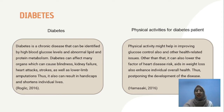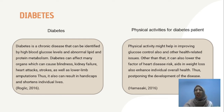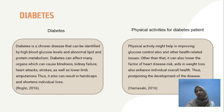Next is diabetes. Diabetes is a chronic disease identified by high blood glucose levels and abnormal lipid and protein metabolism. Diabetes can affect many organs which can cause blindness, kidney failure, heart attacks, strokes, as well as lower limb amputations. It can also result in handicaps and shortens individual lives. Physical activities for diabetes patients help in improving glucose control and other health-related issues. It can also lower the risk factor of heart disease, aid in weight loss, enhance individual overall health, and postpone the development of the disease.